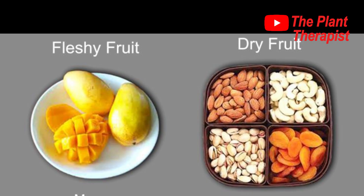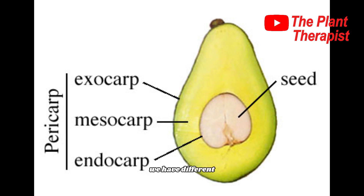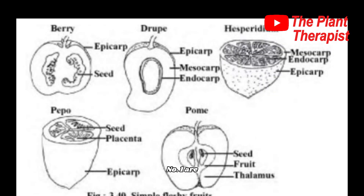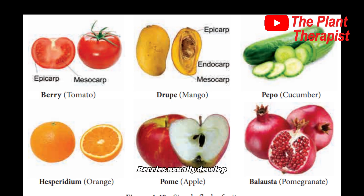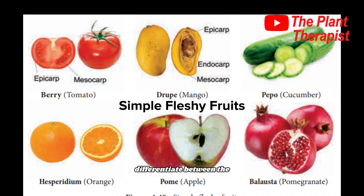The first kinds of fruits are fleshy fruits — fruits whose mesocarp is at least partly fleshy at maturity. Under fleshy fruits we have different types. Number one are berries. Berries usually develop from a compound ovary and commonly contain more than one seed. In berries, the entire pericarp — made up of the endocarp, mesocarp, and exocarp — is fleshy, and it is difficult to differentiate between the mesocarp and the endocarp.